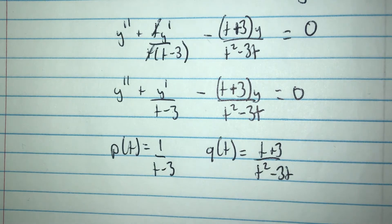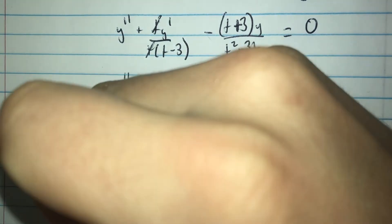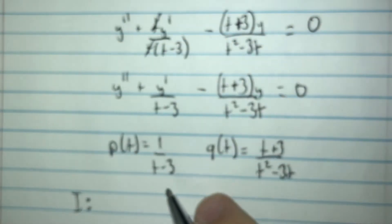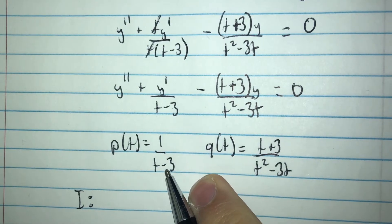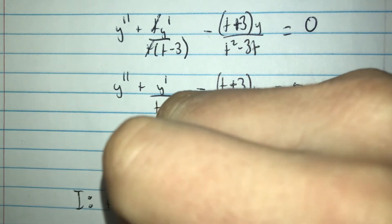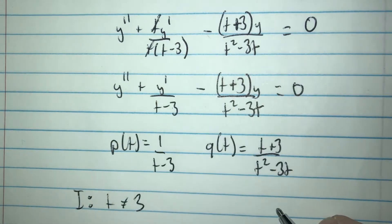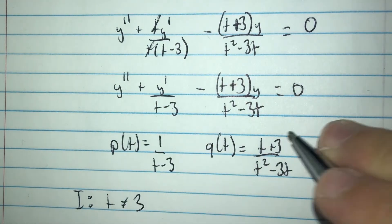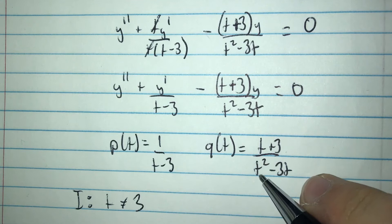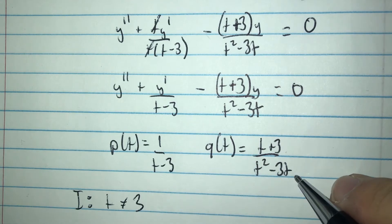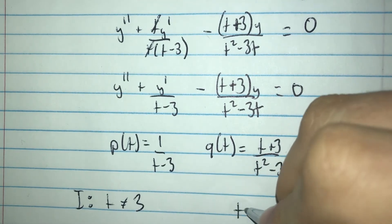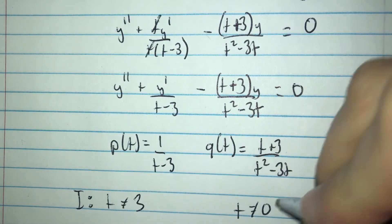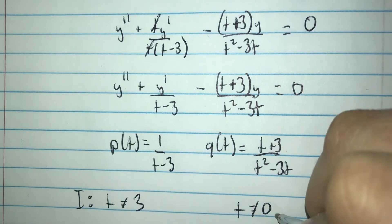Now we determine what interval both p of t and q of t are defined on. For p of t, the denominator cannot be zero, so t cannot equal 3. For q of t, we factor the denominator as t times t minus 3, so t cannot equal 0 and also cannot equal 3.